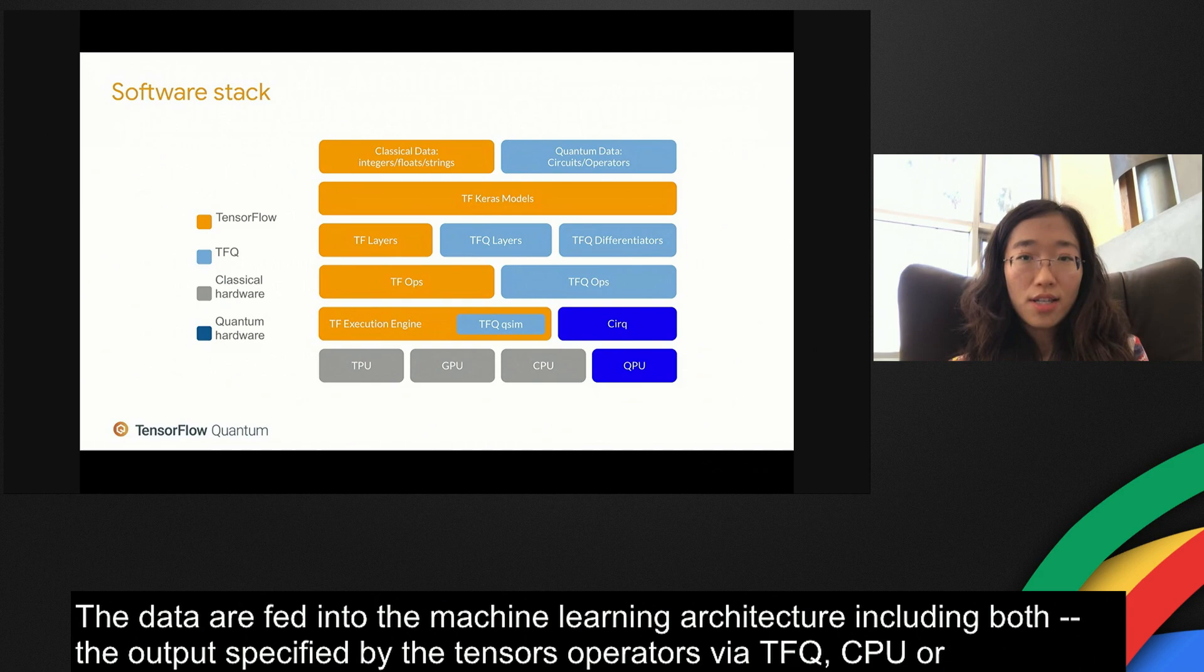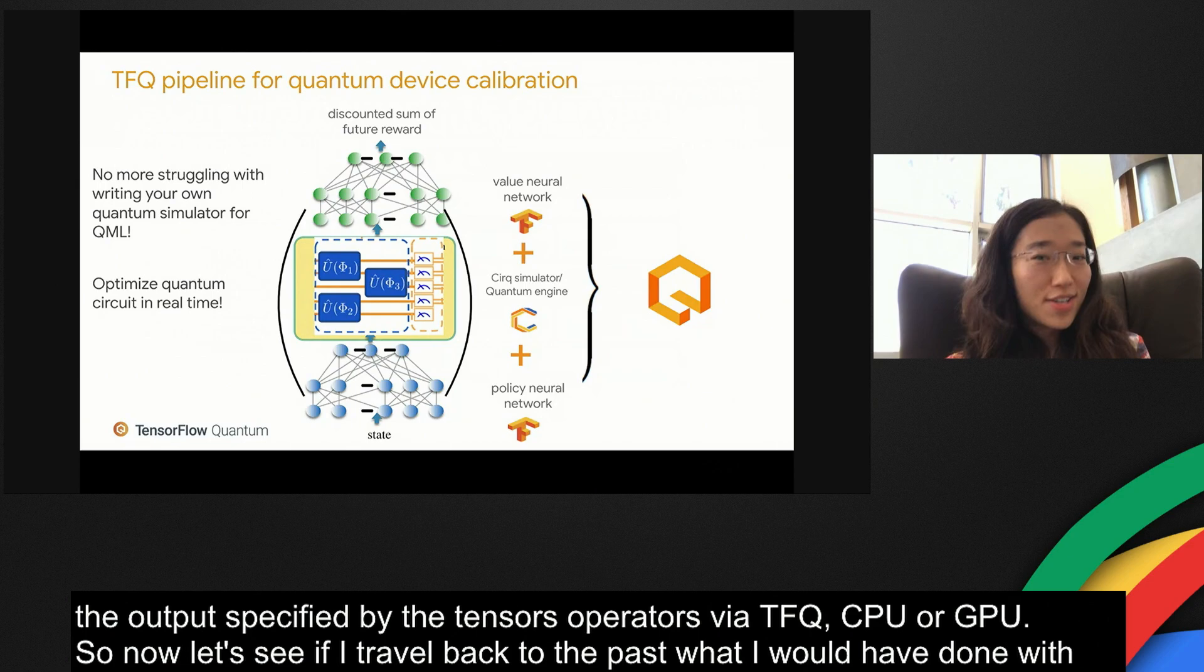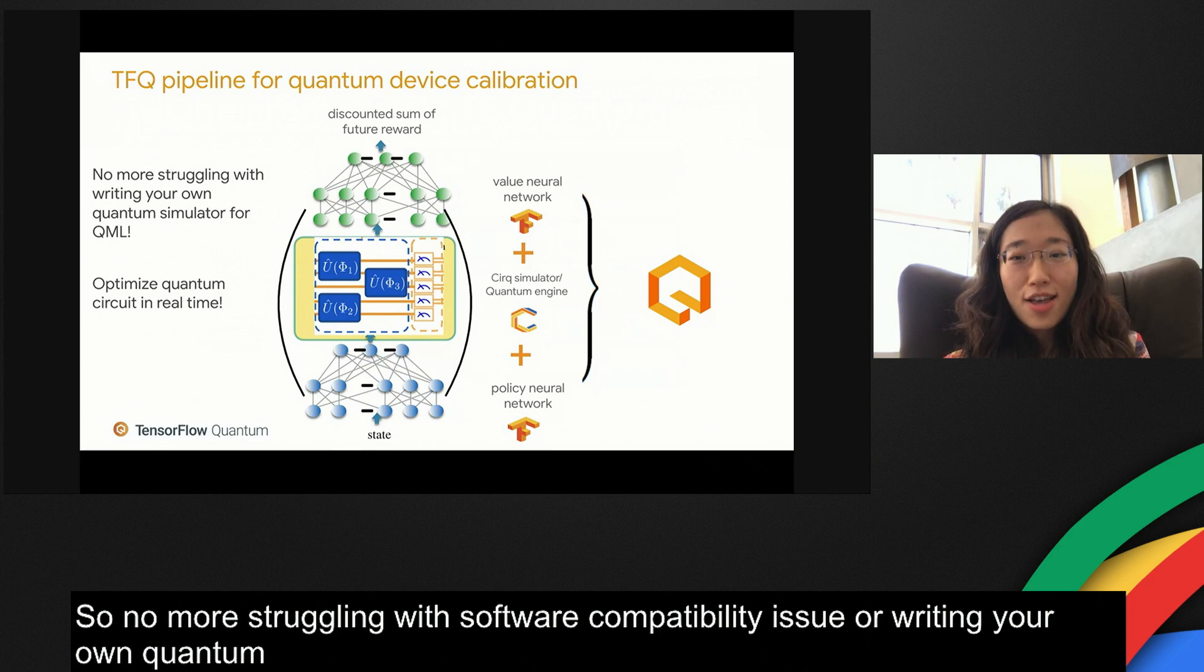Now let's see if I travel back to the past, what I would have done with TFQ for my reinforcement learning project. No more struggling with software compatibility issues or writing your own quantum simulators. Moreover, with the choice of a QPU, you can optimize quantum circuits in real time.